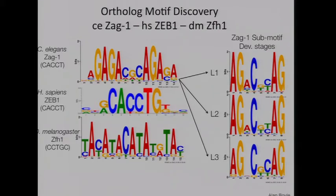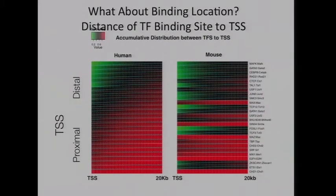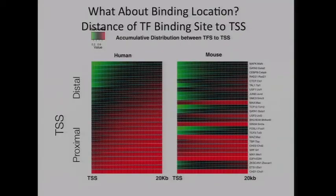What about binding locations? Starting with the simplest case — comparing orthologous factors between human and mouse — you can see whether they bind near promoters or enhancers. Transcription factors fall into three classes: those that love to be around promoters, those that love enhancers (which tend to be fairly distant in humans and mouse), and those that like to be at both. Plotting accumulative distance from the TSS out to 20 KB, red means it likes to be around the promoter and green means it likes to be distal, typically at an enhancer.